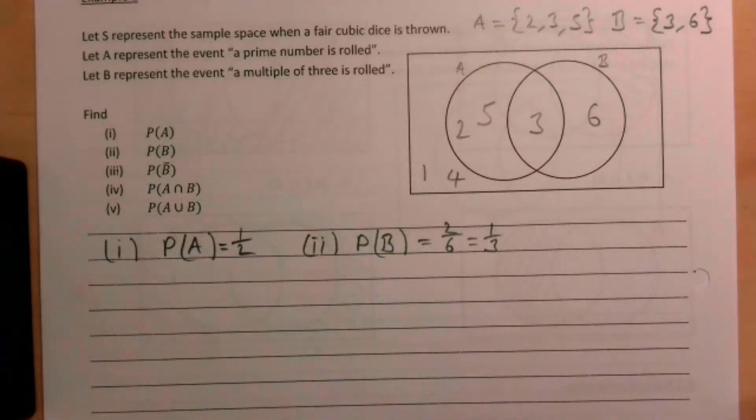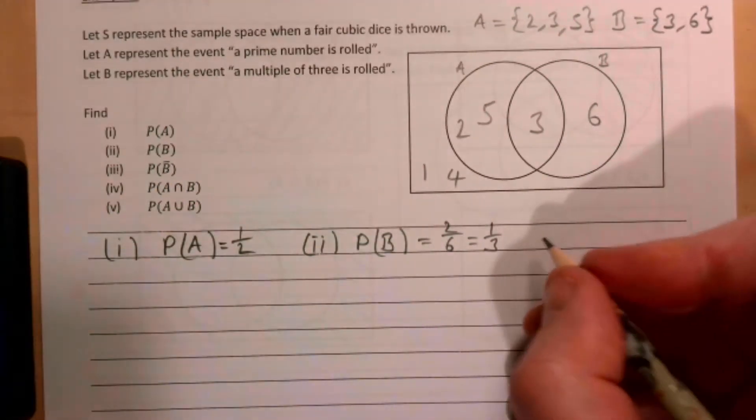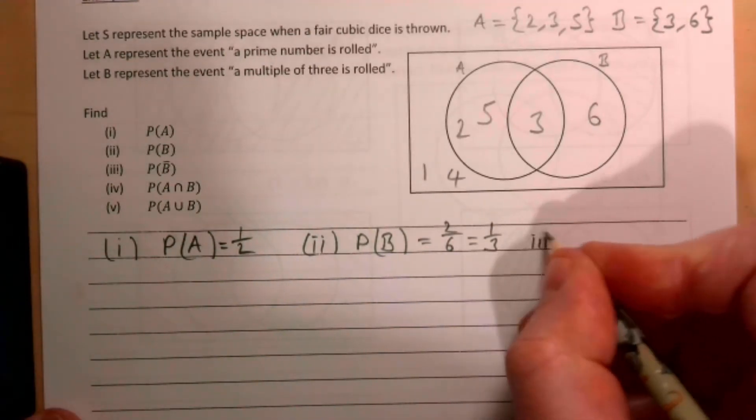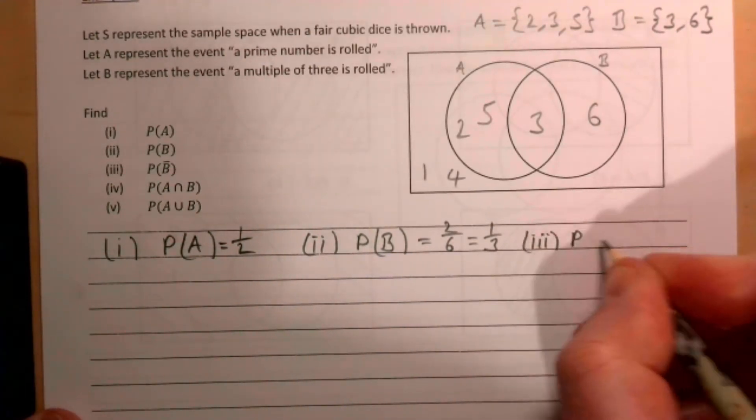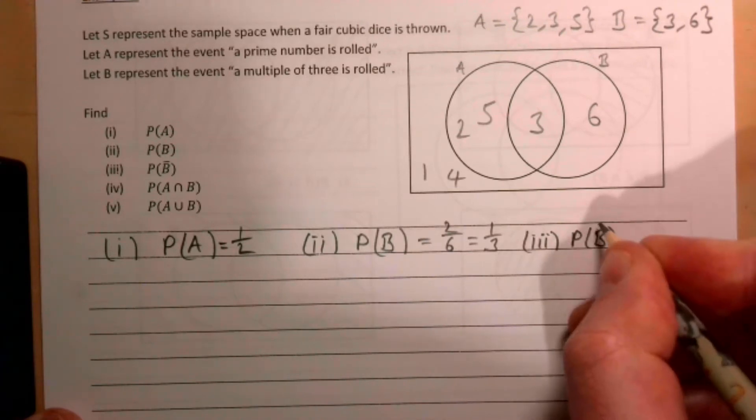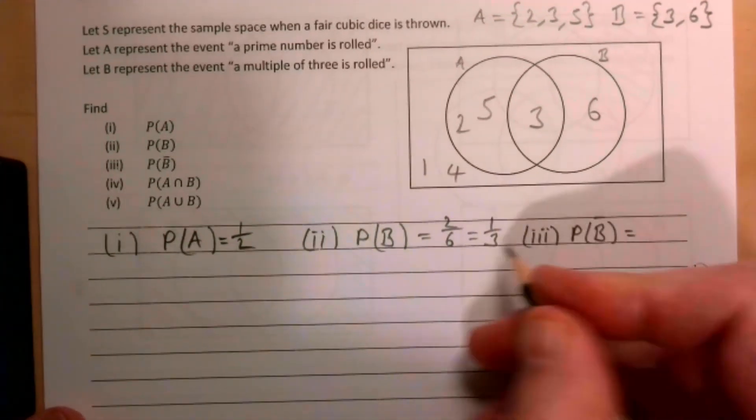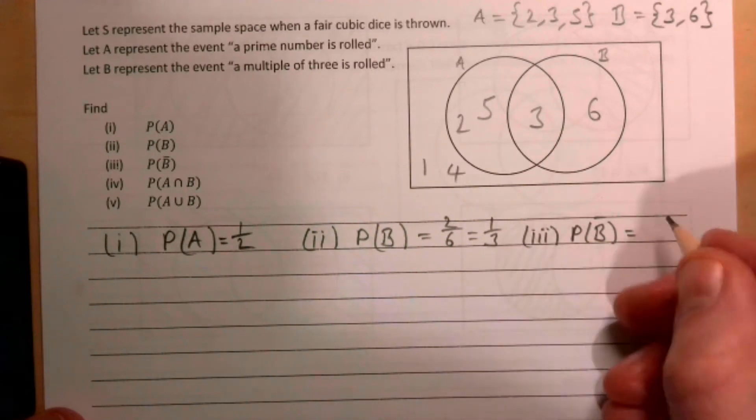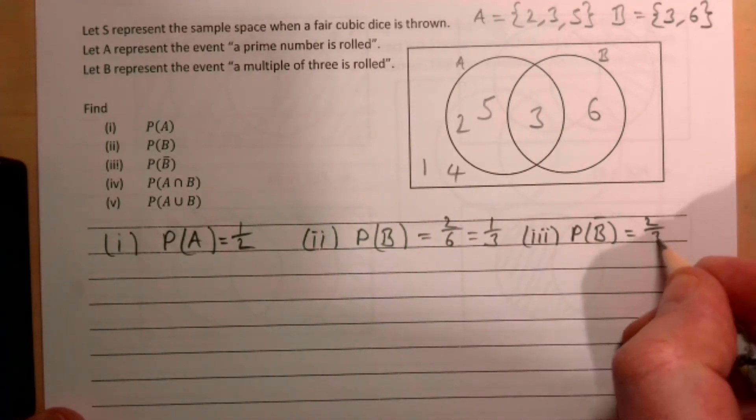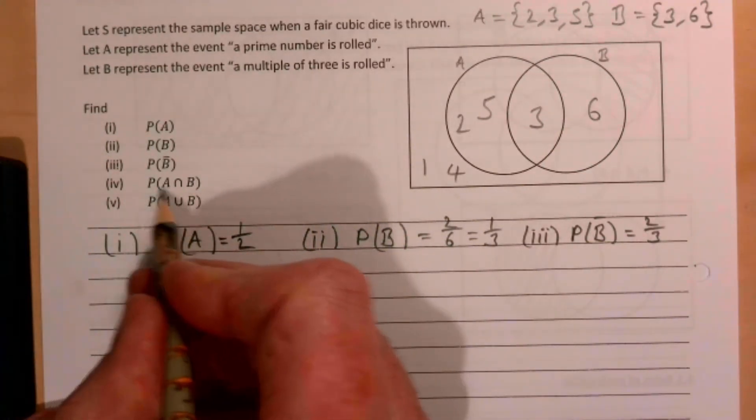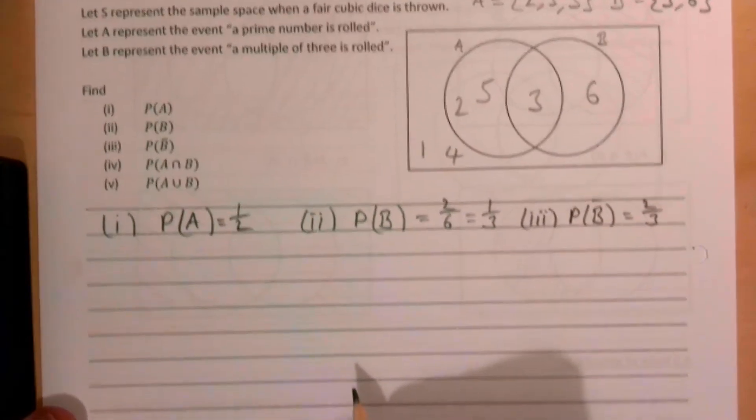Part three, they want the probability of not B. Remember we're writing that like this: the probability of B is a third, so the probability of not B is obviously then going to be two thirds. Part four, the probability of A and B.